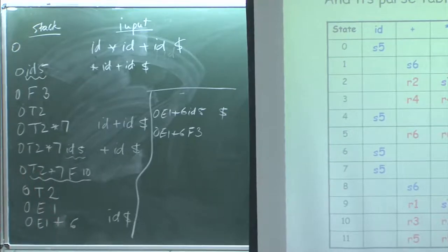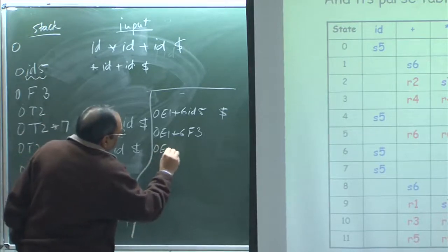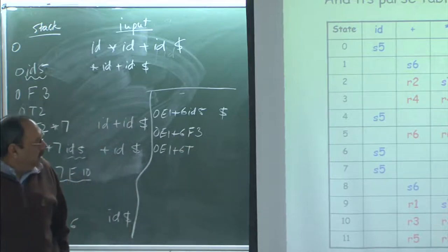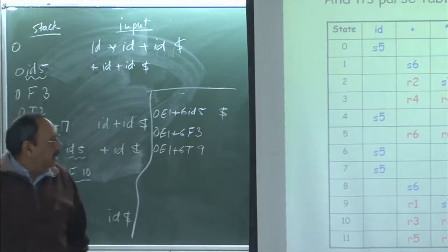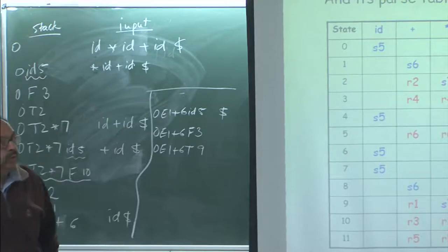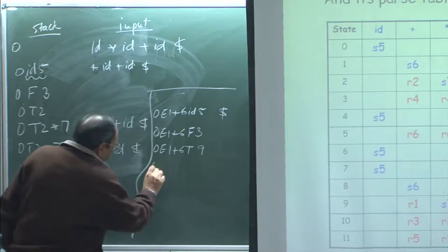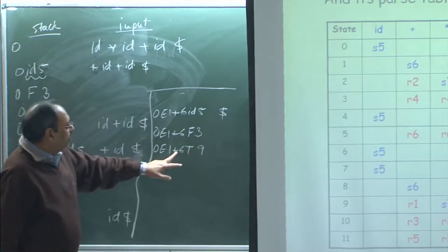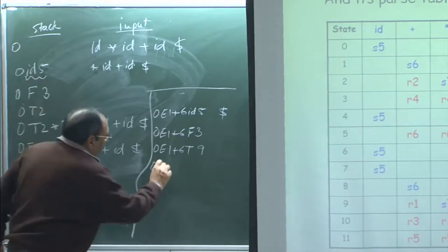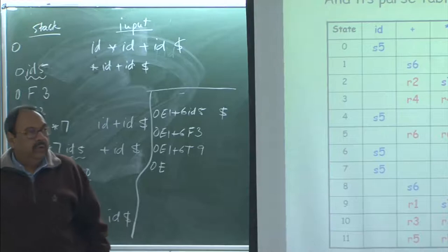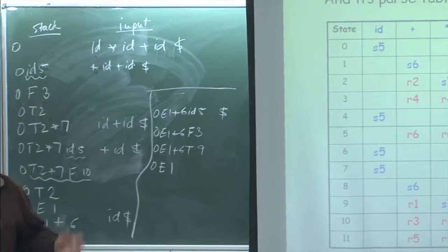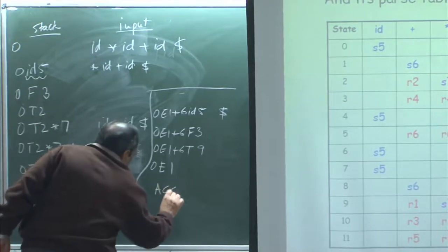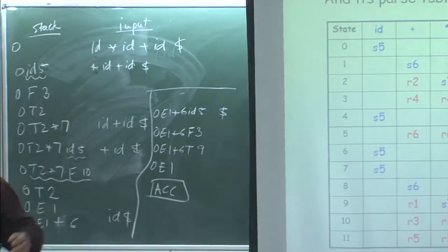State 6 seeing id: shift and go to state 5. Stack becomes '0 E 1 plus 6 id 5', input is '$'. State 5 seeing dollar: reduce by rule 6 (f goes to id). Push f, goto table for state 6 with f gives state 3. Stack is '0 E 1 plus 6 f 3'. State 3 seeing dollar: reduce by rule 4 (T goes to F). Stack becomes '0 E 1 plus 6 T 9'. State 9 seeing dollar: reduce by rule 1 (E goes to E plus T). Pop 6 symbols, push E, go to state 1. State 1 seeing dollar: accept.